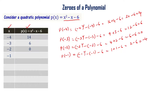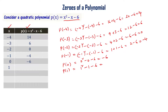For x equal to 0: p(0) = 0² minus 0 minus 6 = minus 6. For x equal to 1: p(1) = 1 minus 1 minus 6 = minus 6.